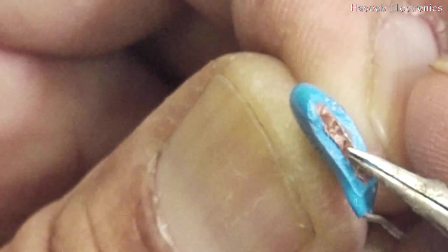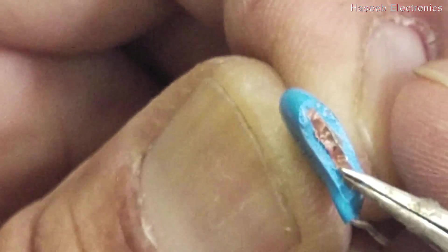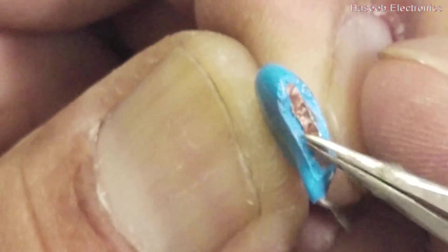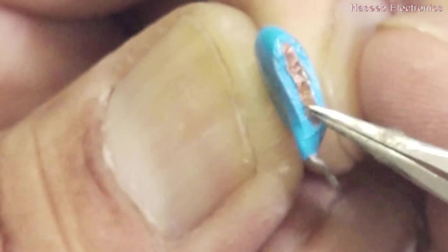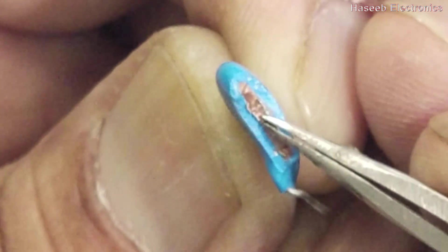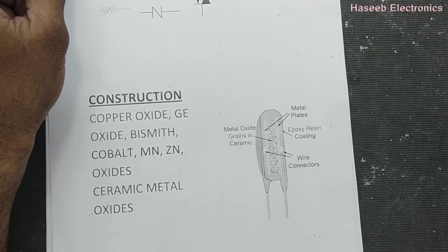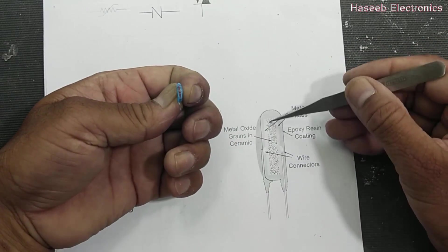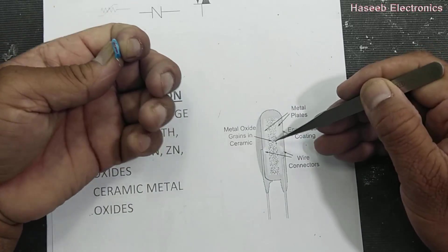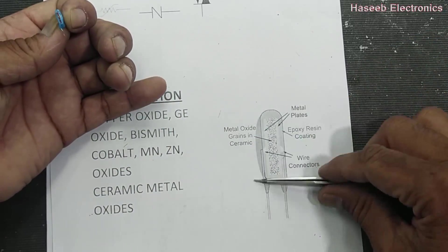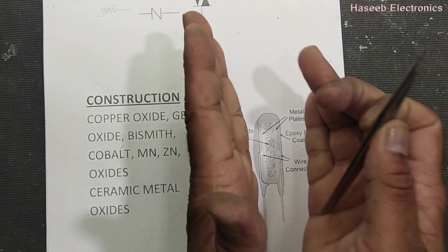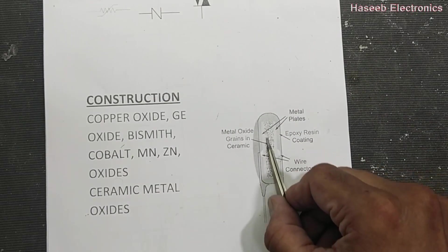We have two plates which are filled with ceramic grains with oxides — copper oxide, germanium oxide, bismuth, cobalt, manganese, zinc oxide — ceramic metal oxides. So different materials are filled inside. This is the cut view: it is filled in with grains of ceramic or other oxides. When it is filled in it becomes like a capacitor, with two plates filled with oxide materials.